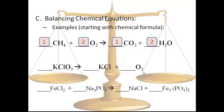On to the next one: KClO3. Look at your K and your Cl — you have one K on both sides and one Cl on both sides. Now look at your O's: there are three on the left and two on the right. We need to find a common multiple — let's try six, since both three and two multiply to reach it. On the left, double the O's; on the right, triple them. Now we've got six O's on each side, but that's messed up our K and Cl, which is why we always double-check.